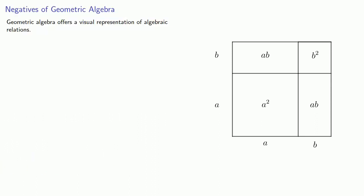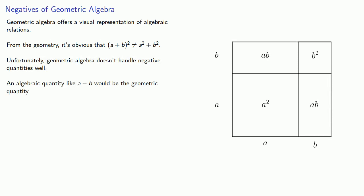Now, geometric algebra offers a visual representation of algebraic relations. So from the geometry, it's obvious that A plus B squared is not the same as A squared plus B squared. Unfortunately, geometric algebra doesn't handle negative quantities well. For example, an algebraic quantity like A minus B would be the geometric quantity: how about the remainder when a line is removed from a line?